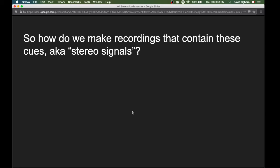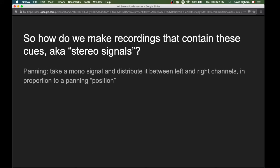So we use these two cues to form our perceptions of the space of sound together with some other cues. So how can we make recordings that contain these cues, aka stereo signals, and thus recordings that take advantage of our highly evolved sense of the space of sounds? There's a bunch of different ways that we're going to talk about in this section of the course.